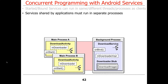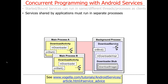One reason to run a service in a separate process is that some services are intended to be shared by many applications. For example, Android comes with a download manager — a service that runs in the background and downloads things for you. In assignment four, you'll write a service where multiple applications could conceivably connect to it. Whenever you write something shared by other applications, you need it in a separate process; otherwise it's tightly bound to the activity that spawned it, and if that activity goes away, the service would too.